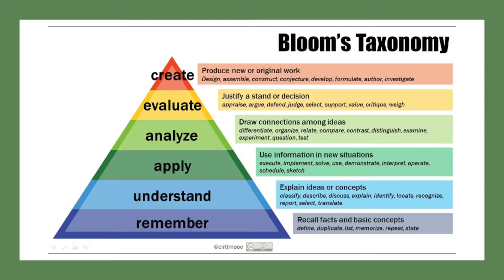Bloom's Taxonomy was created in 1956 and updated in 2001. The taxonomy, a classification system, identifies six levels of thinking from the lowest at the bottom to the highest at the top. While it is mainly designed for teachers to ensure that students are thinking at all levels, it can also be used by students to enhance their thinking and learning, moving beyond the bottom two levels to higher levels of critical thinking.